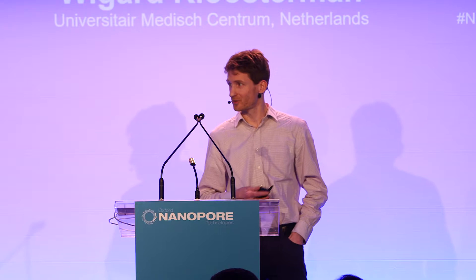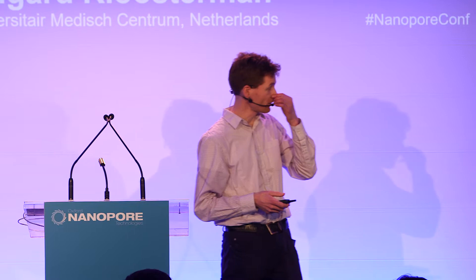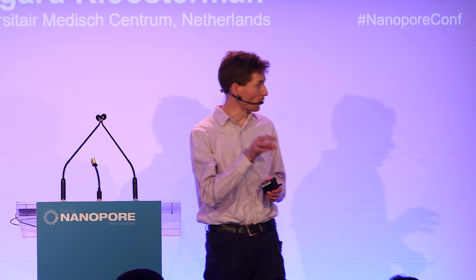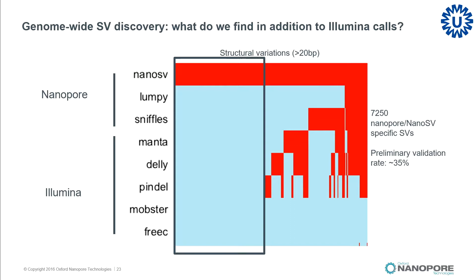We did serious validation analysis to find out how many of these structural variation calls are really valid. For calls overlapping between both Illumina and nanopore data sets, there is very high accuracy — we could validate most of those variations. For variations overlapping between one, two, or three callers run only on nanopore data, validation rates dropped quite considerably, and we're still actively looking at this. There are still thousands of good variants in there, but we need to tweak the parameters to get a high-confidence consensus call set. The same is true for data only captured by our own NanoSV caller — around 30 to 40 percent validation rate, so there's still room for improvement.